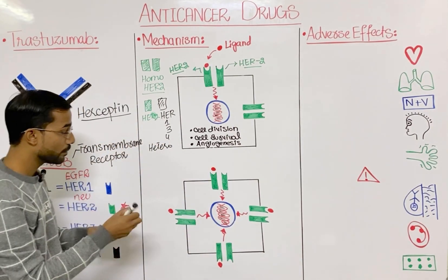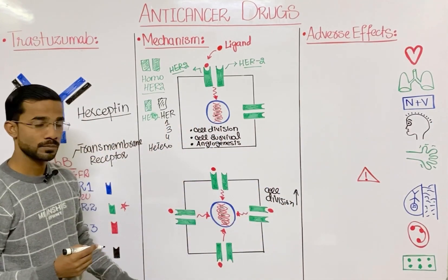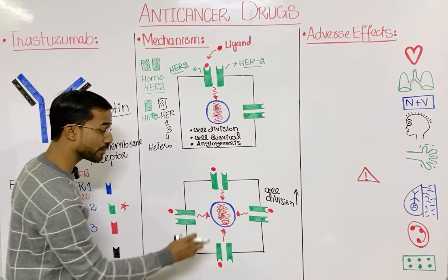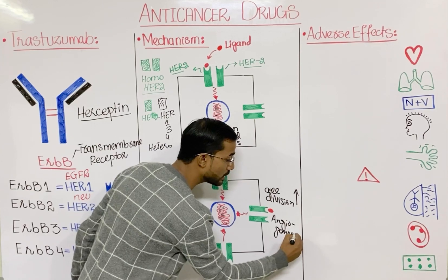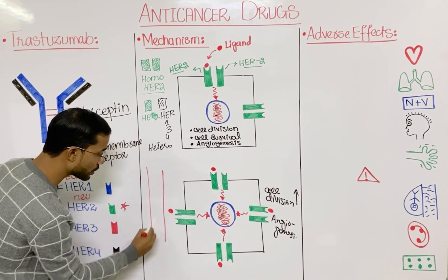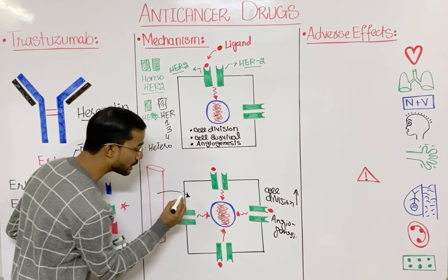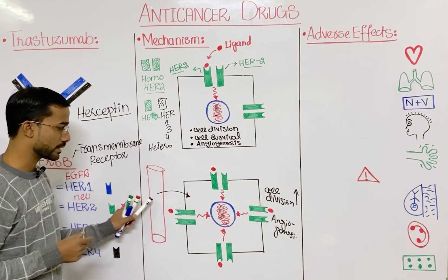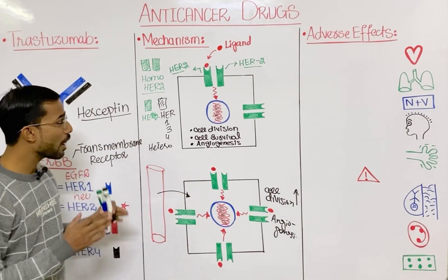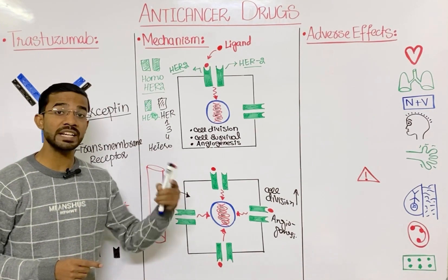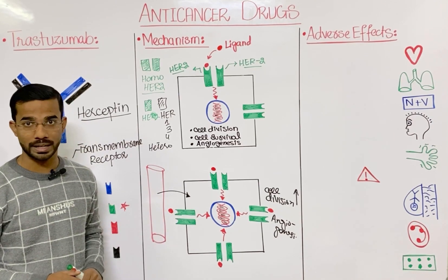With HER2 overexpression, ligands bind to all the HER2 receptors, and the signal transducts from all sides. As a result, cell proliferation and cell division are greatly enhanced — cells rapidly proliferate. There is also a lot of angiogenesis, meaning many blood vessels form around the cells, supplying nutrients. Our main focus is to stop this signal transduction. If we are successful in stopping signal transduction, we will stop cell division and ultimately cure the tumor.